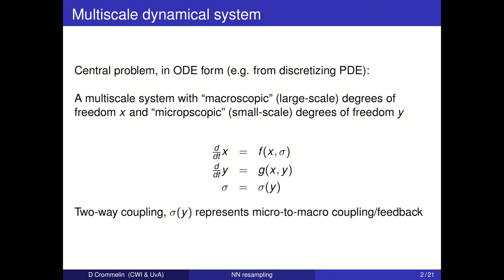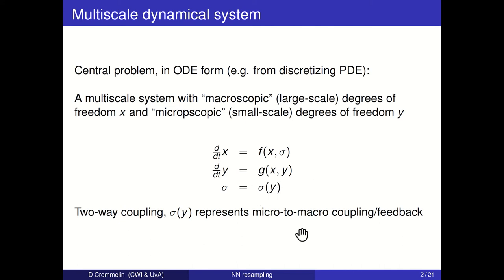The two sets of degrees of freedom are coupled. The x degrees of freedom enter in the equation for the y degrees of freedom, and the coupling back from the small-scale to the large-scale goes through this quantity sigma, which represents the micro-to-macro coupling or feedback.